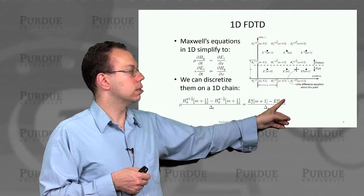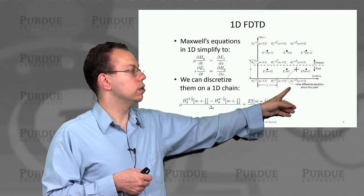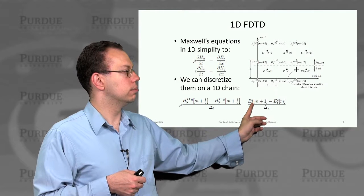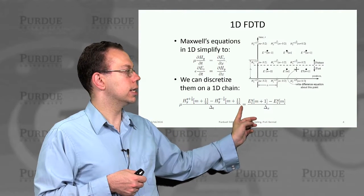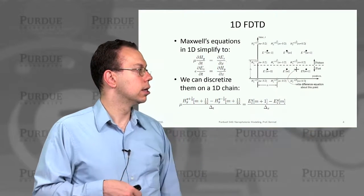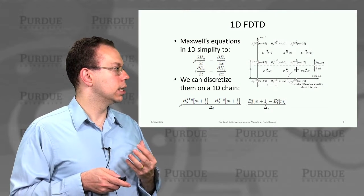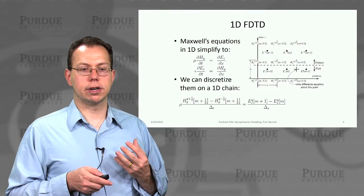And then as a function of the original value plus this extra term that looks something like delta t over delta x times the difference between the adjacent E fields, right? So in other words, this is a relatively straightforward implementation of Faraday's law.